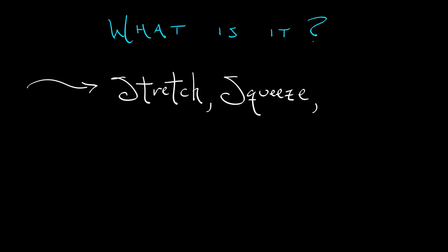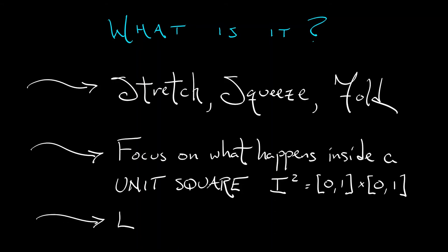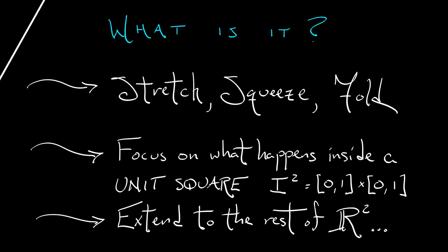It stretches, it squeezes, it folds in a particular manner. We're going to focus on what happens inside a unit square. I might sometimes refer to this as I squared, where I is the interval from zero to one. So I have a little unit square in the plane, left-hand lower corner at the origin, and what it does on that square, we're going to extend to the rest of the plane in some way.